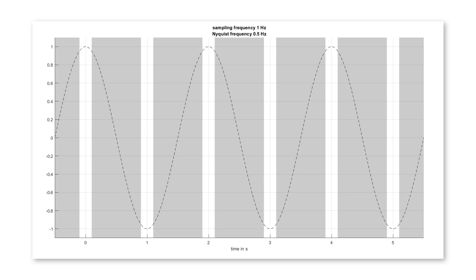In this example we will see the Shannon theorem in action. Let's consider the case where we have a sampling frequency of 1 Hz. At each second you see a white zone which indicates the sampling instance. We also see the Nyquist frequency here — a sine wave with that frequency, which is 0.5 Hz, so it's half the sampling frequency. It's the highest frequency which can be resolved with that grid.